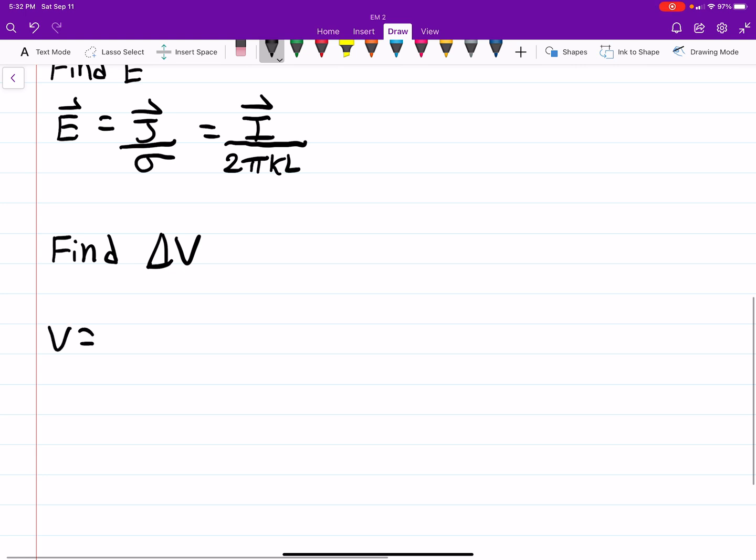So now that we have the E field, that's actually quite easy, because it's just the negative integral from B to A, so going outside in, of your E field, which we just found, times DL. Call it DL prime. So then that gets you minus I over 2 pi K L times A minus B.